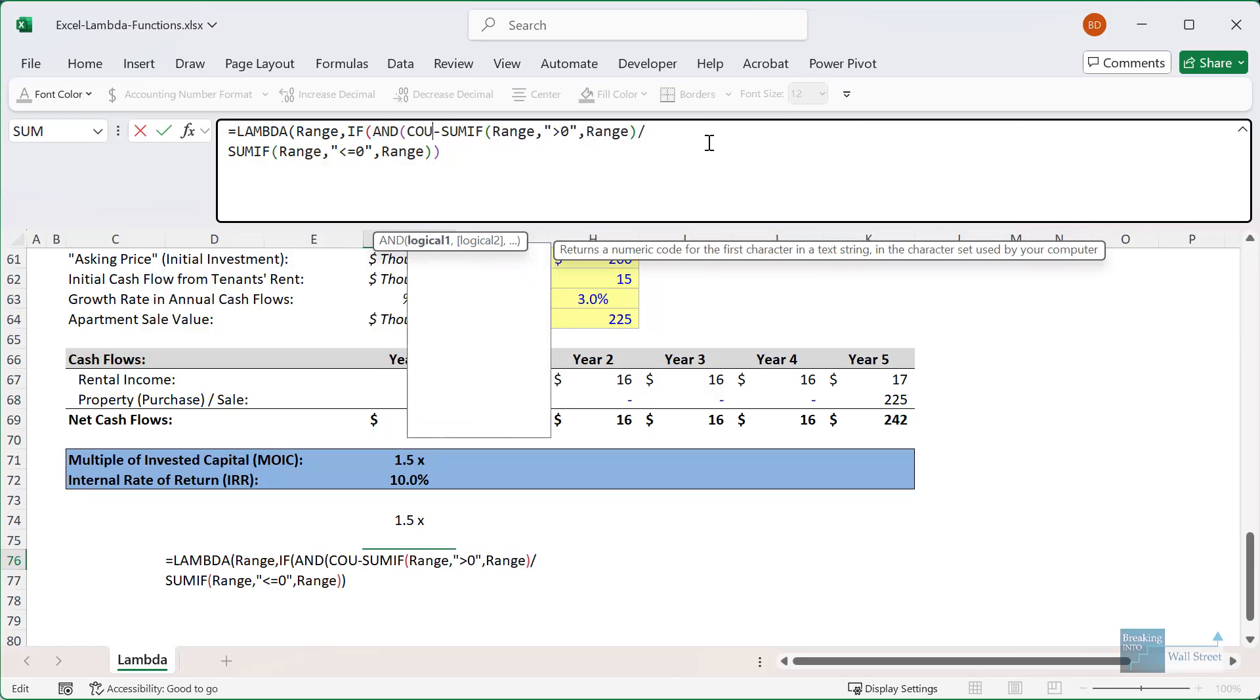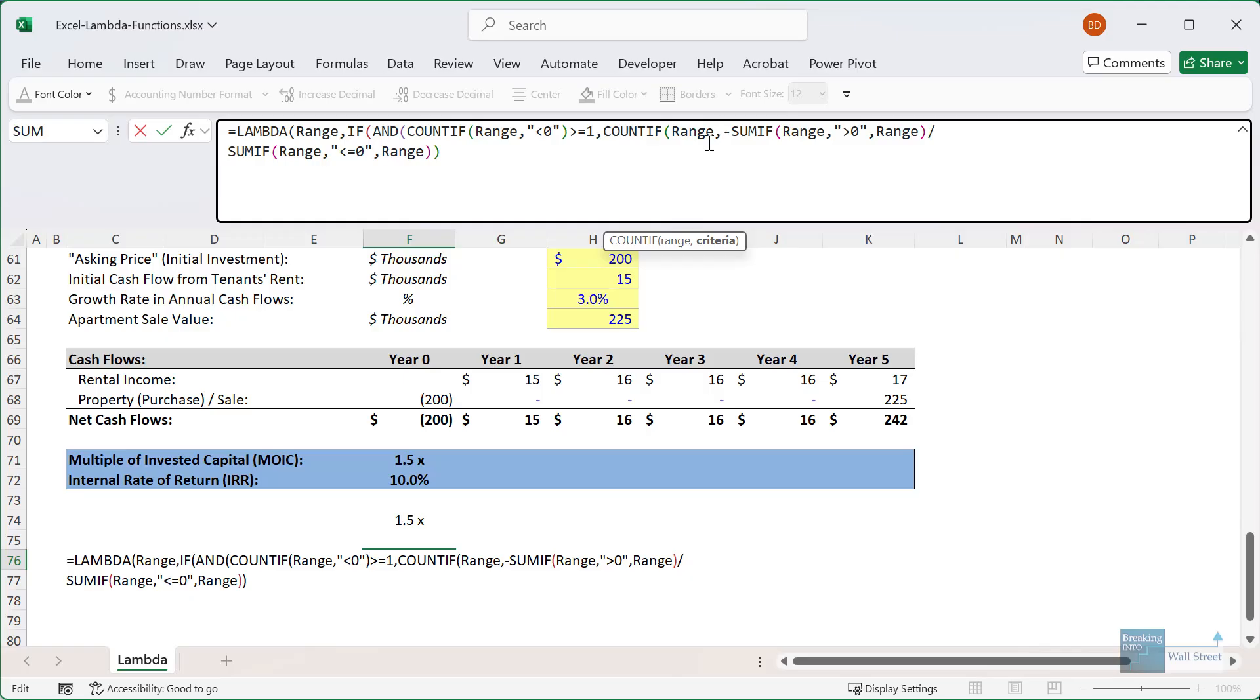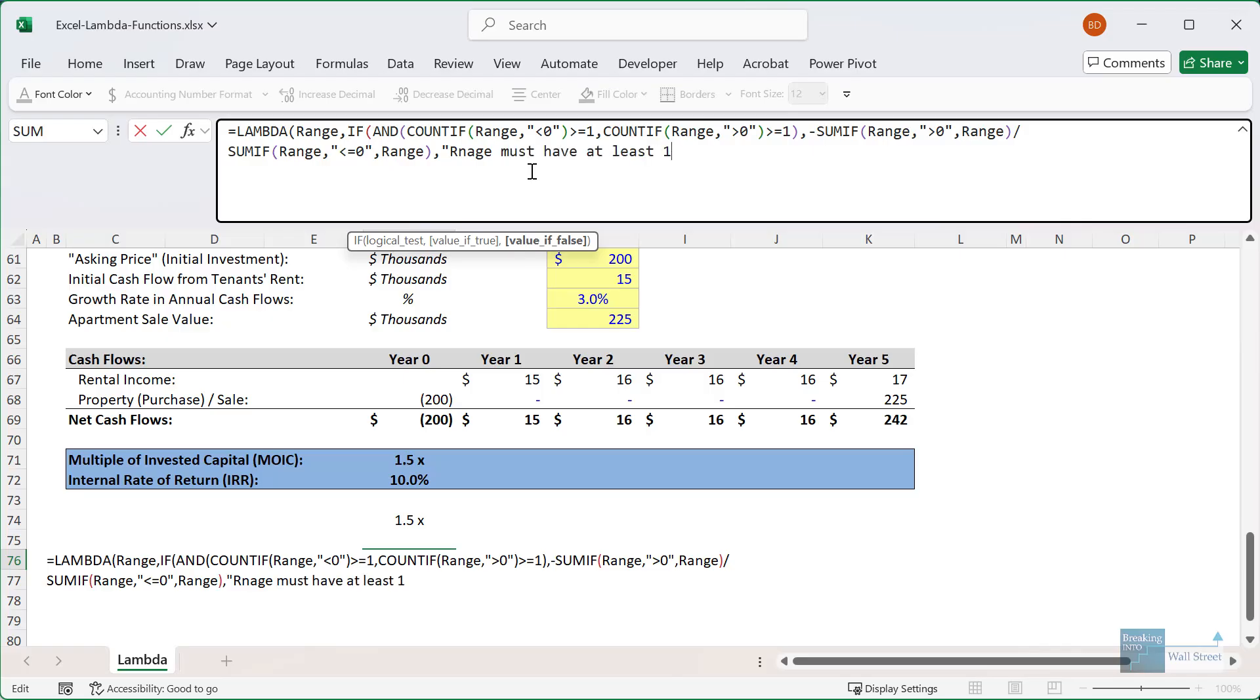So I'll say IF and, and then COUNTIF over this range that we've defined, and I'll say less than zero, and we want this to be greater than or equal to one. And then we also want to count up everything in this range that is greater than zero. And then this has to be greater than or equal to one. And I'm closing the parentheses there to correspond to the AND statement in the beginning. So if this is all true, then we can execute the function as is. But if it is not true, then we need to go to the end right here. And where it says value if false, I'll enter a comma and say range must have at least one positive and one negative number in it.